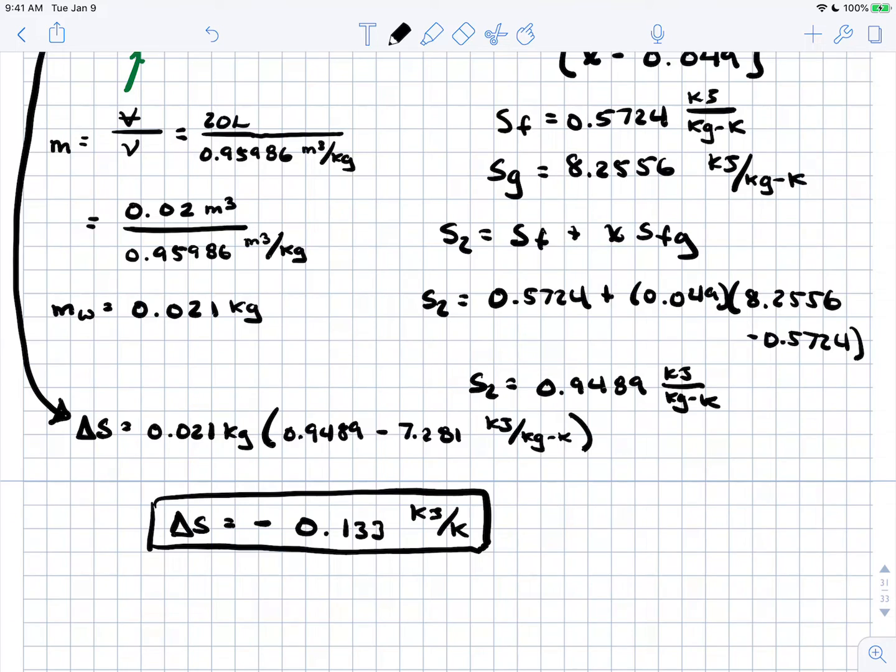You see the answer is negative, indicating entropy is decreasing. This is due to the system losing heat to the environment. Remember, entropy for a system being negative is okay. What we want to be careful with is the total entropy generated between the system and surroundings, which should always be zero or greater than zero to not violate the second law of thermodynamics.